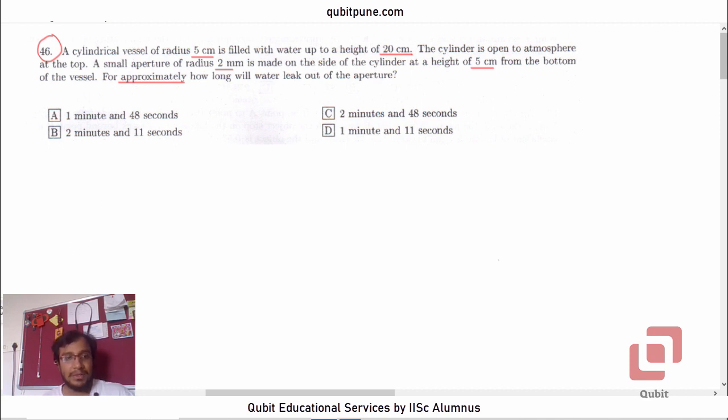To solve this MCQ, let us first draw the cylindrical vessel. The radius of the cylindrical vessel is 5 cm. The water is filled up to a height of 20 cm, so let us say water is here initially. There is a small aperture of radius 2 mm on the side of the cylinder at a height of 5 cm from the bottom. Let us make the aperture here.